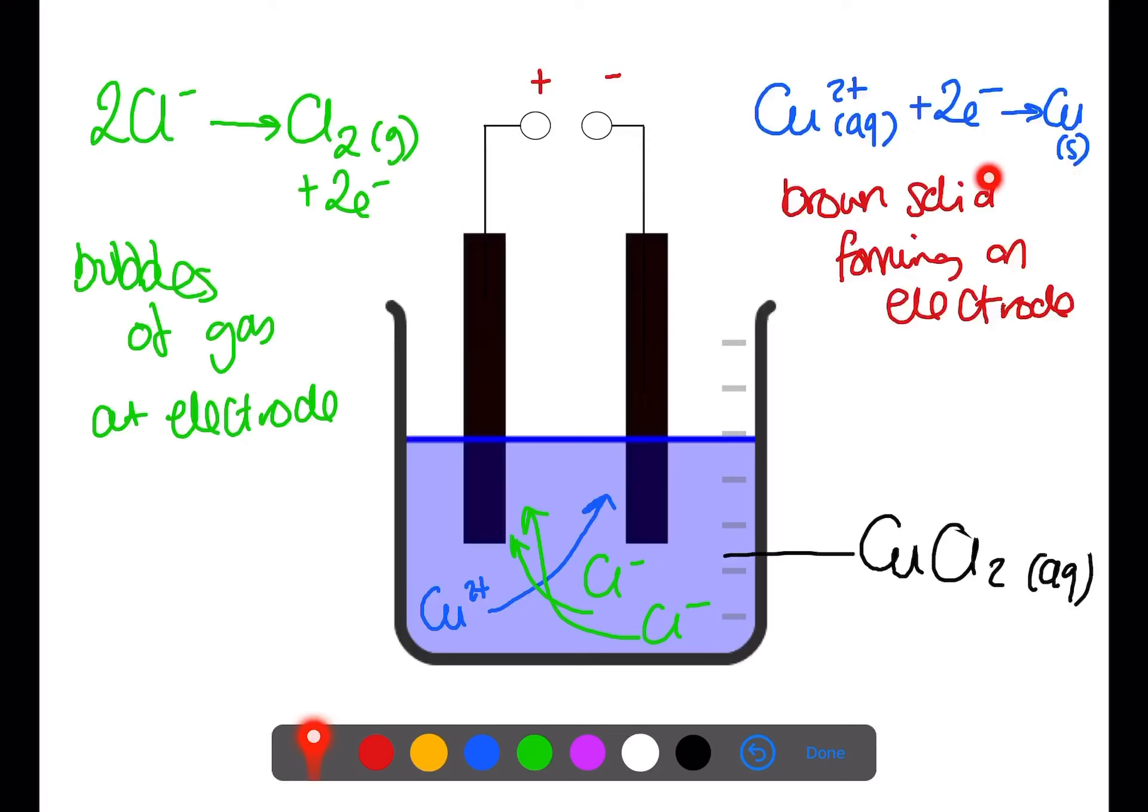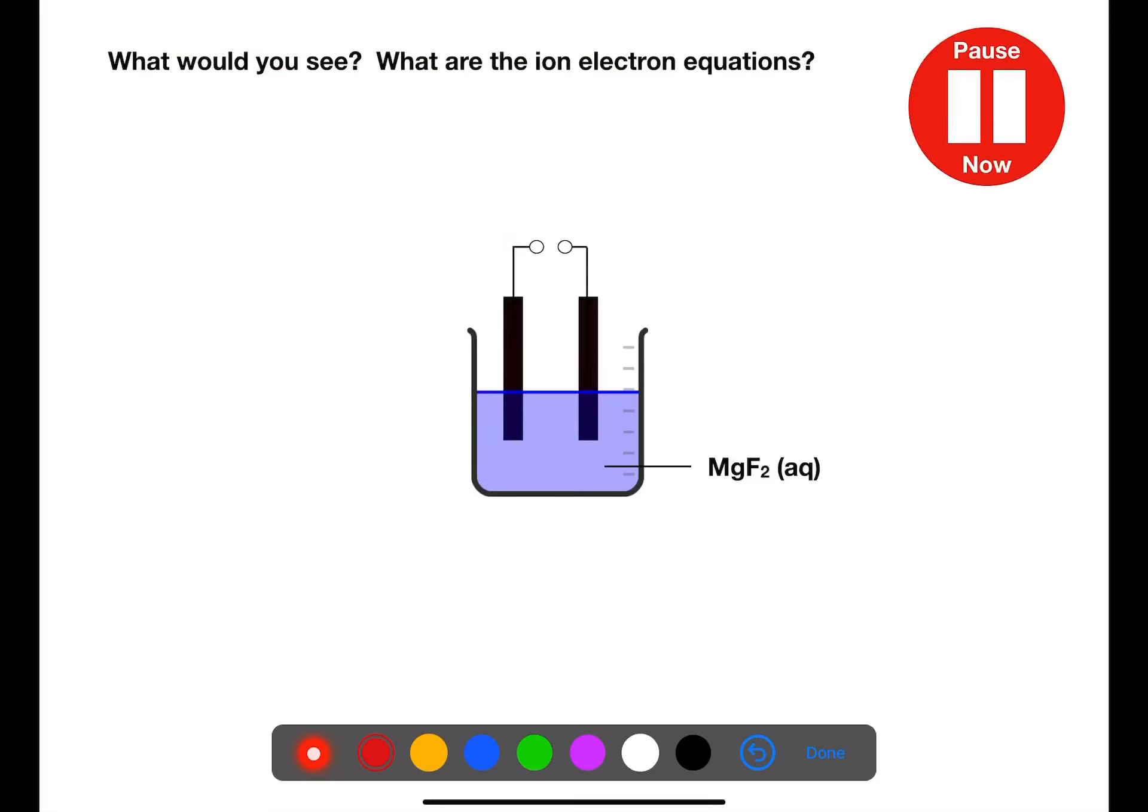This equation here for the copper gaining electrons is called a reduction equation. For the chloride ions we have an oxidation equation. Pause the video now and explain what you would see and write the ion electron equations for this example.